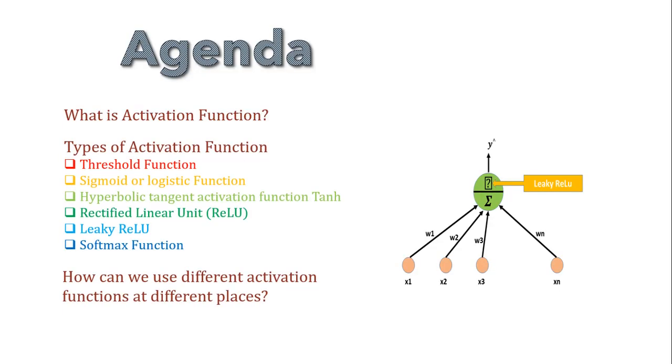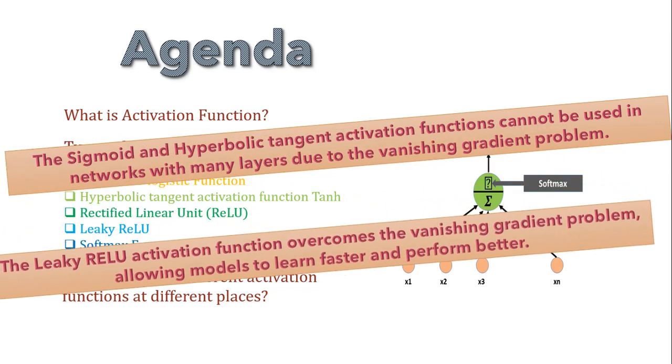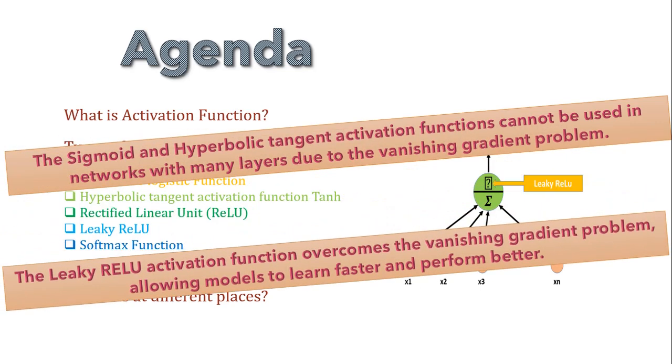After completing this tutorial you will know that first, sigmoid and hyperbolic tangent activation functions cannot be used in networks with many layers due to the vanishing gradient problem, and second, leaky ReLU function overcomes the vanishing gradient problem allowing models to learn faster and perform better. So watch this video till end for understanding this particular thing as I am going to explain you about each and every aspect of activation function.